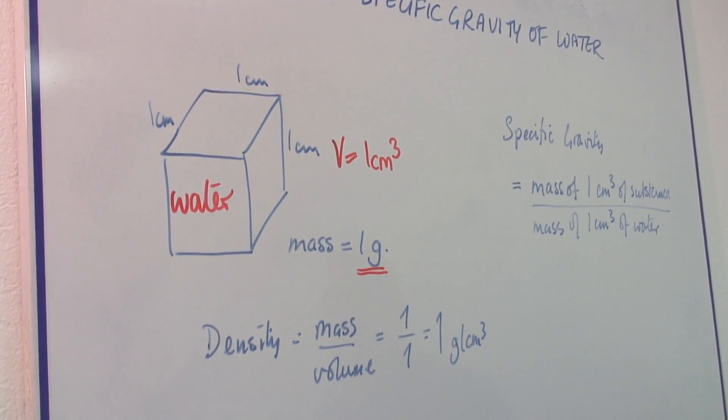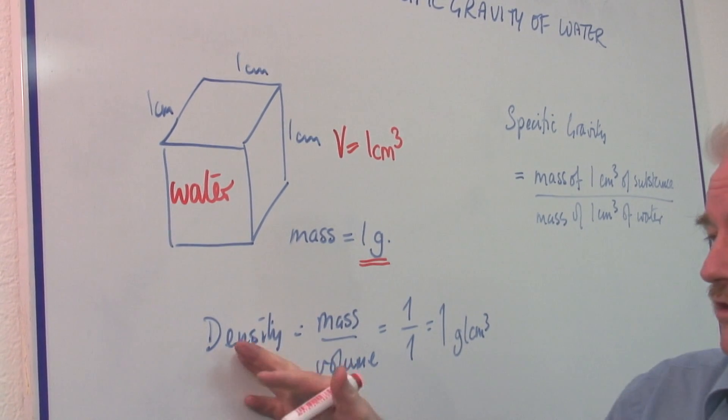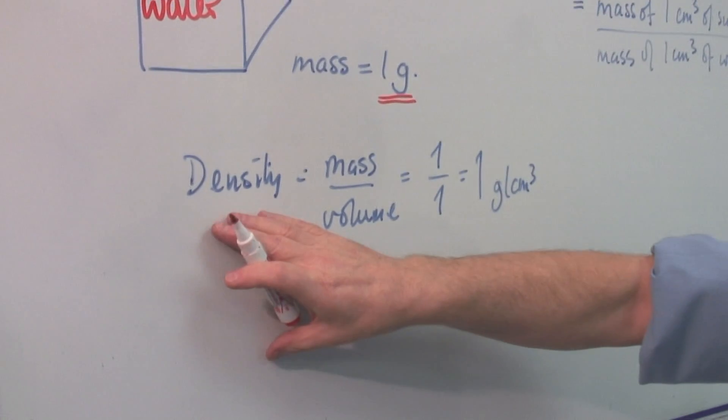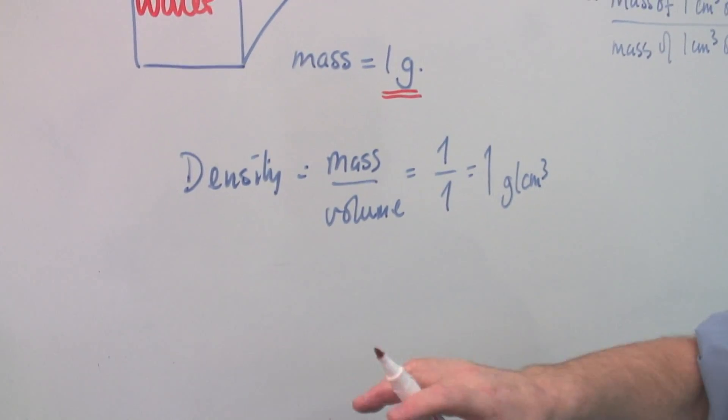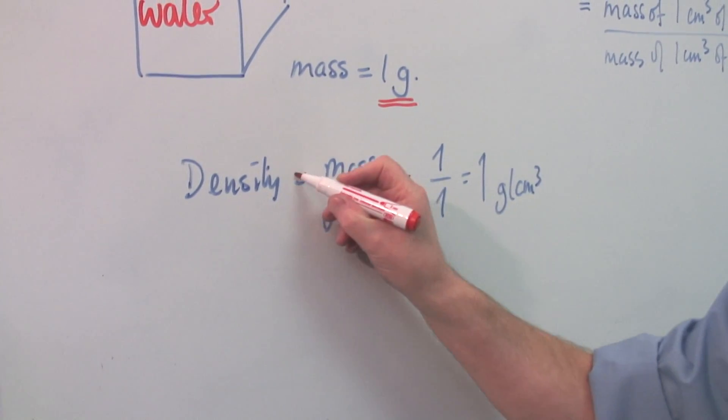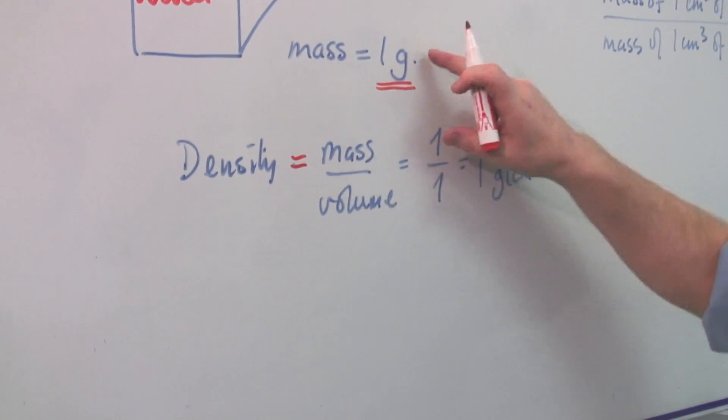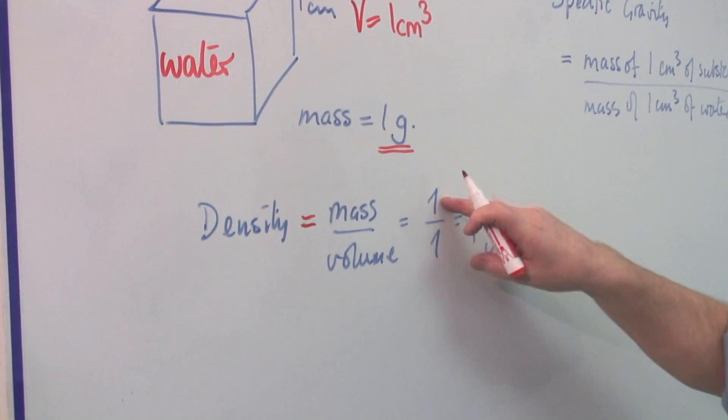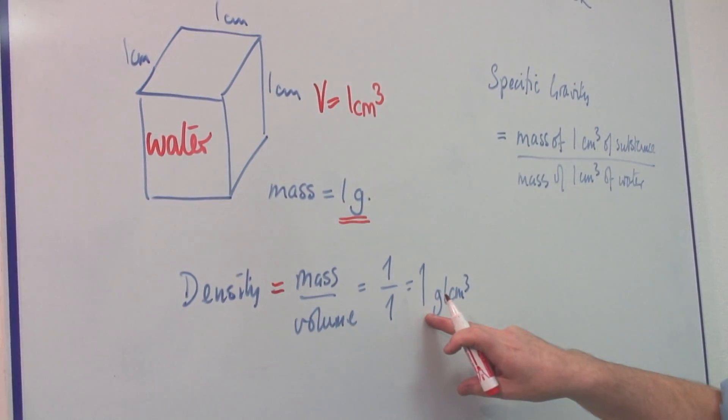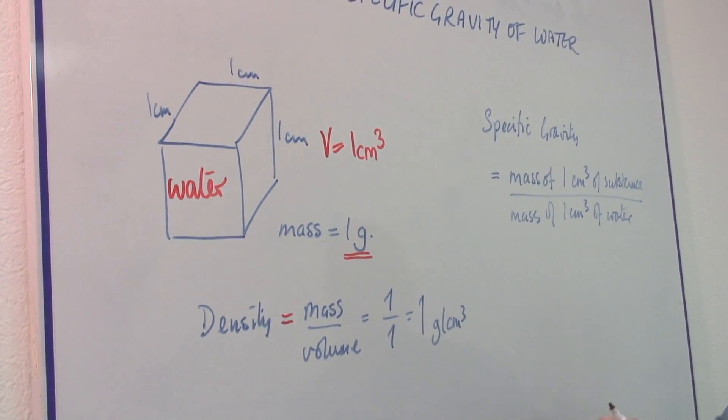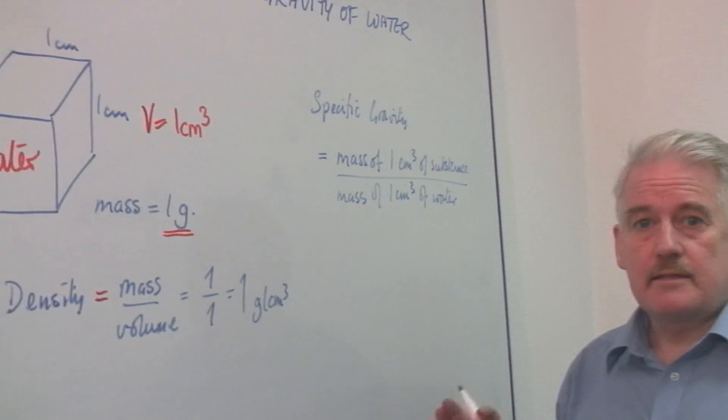So because we have this quantity density, it's density which is important in this case. Density is how heavy something is. So density is mass divided by volume. The mass is one. The volume is one. And that gives us a density of one gram per centimeter cubed.